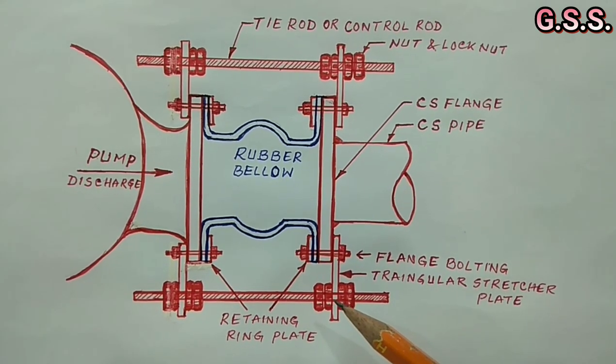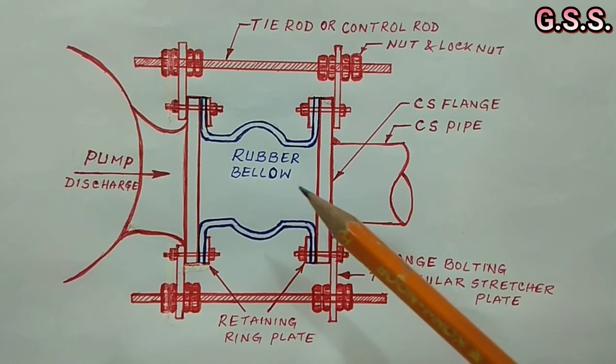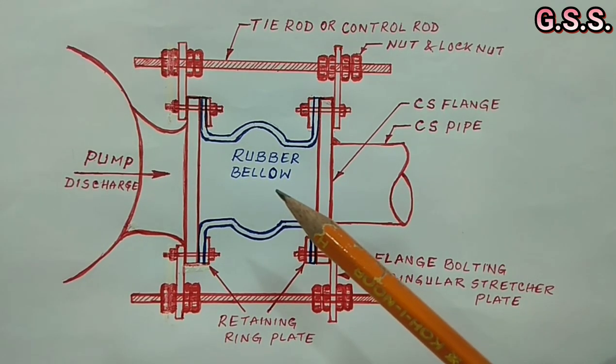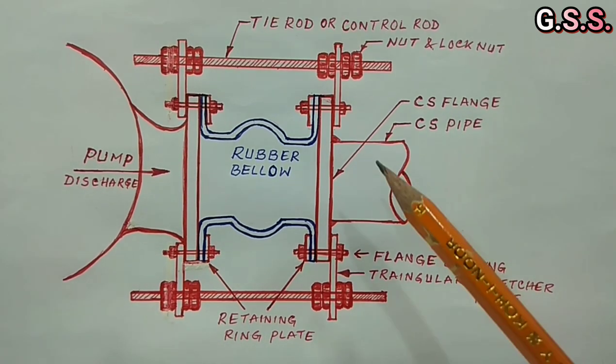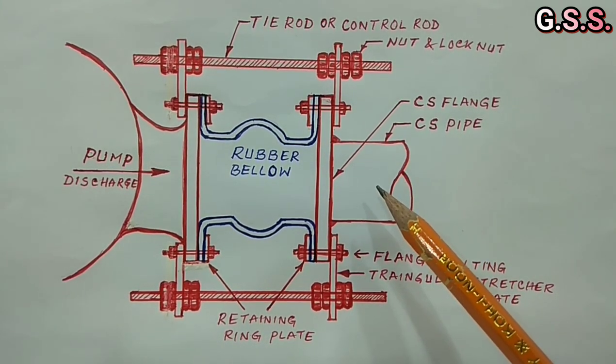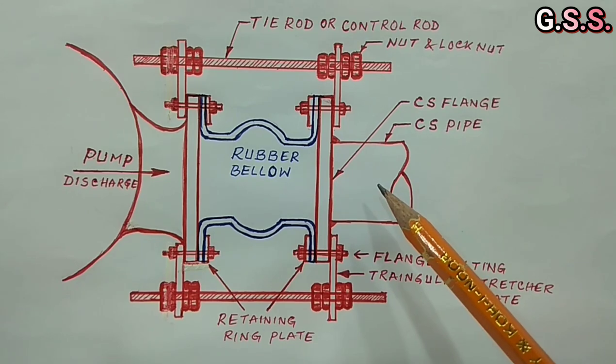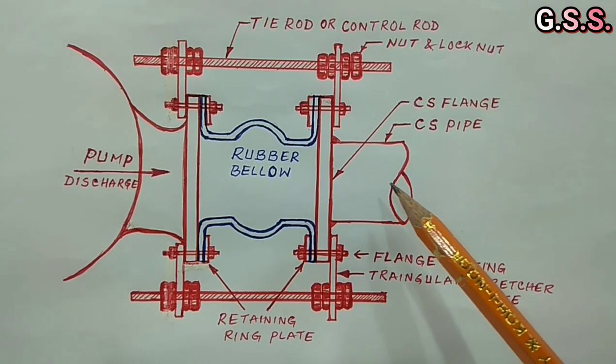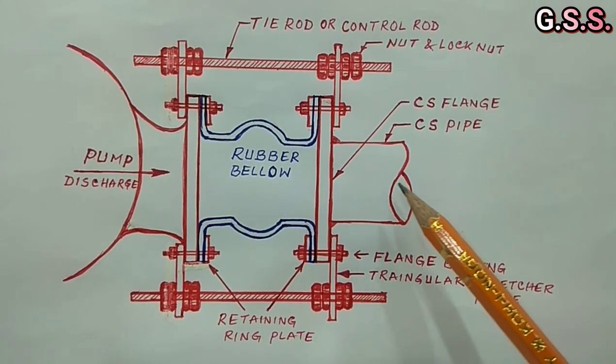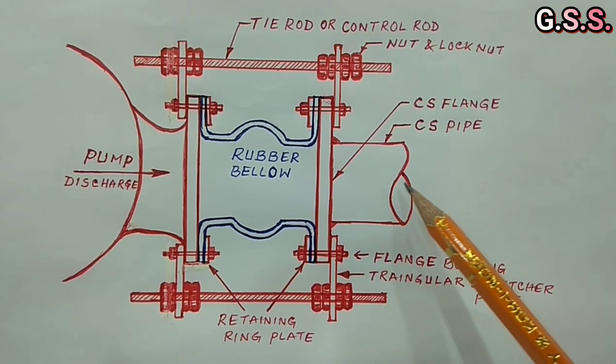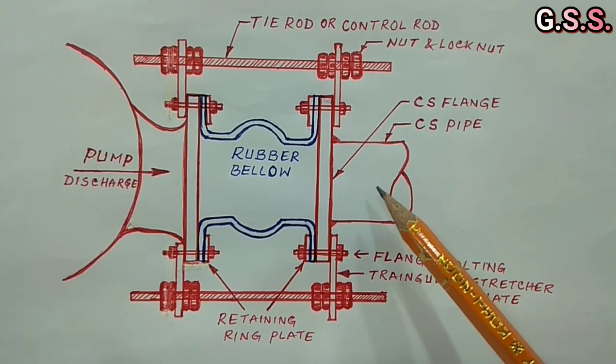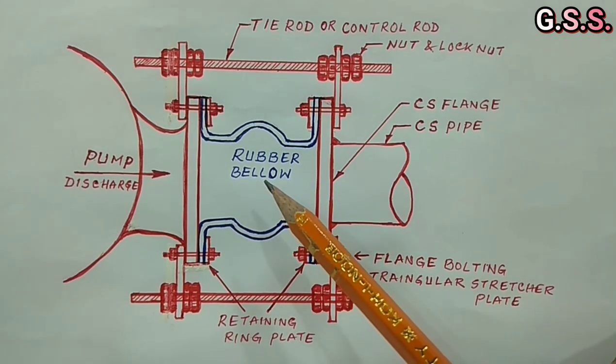Now, bellow installation is complete and we can start the pump. When pump operates, pipeline is pressurized along with the bellow. Due to internal pressure, there will not be any axial pressure thrust in steel pipe because steel pipe is axially very rigid but the bellow is not axially rigid.